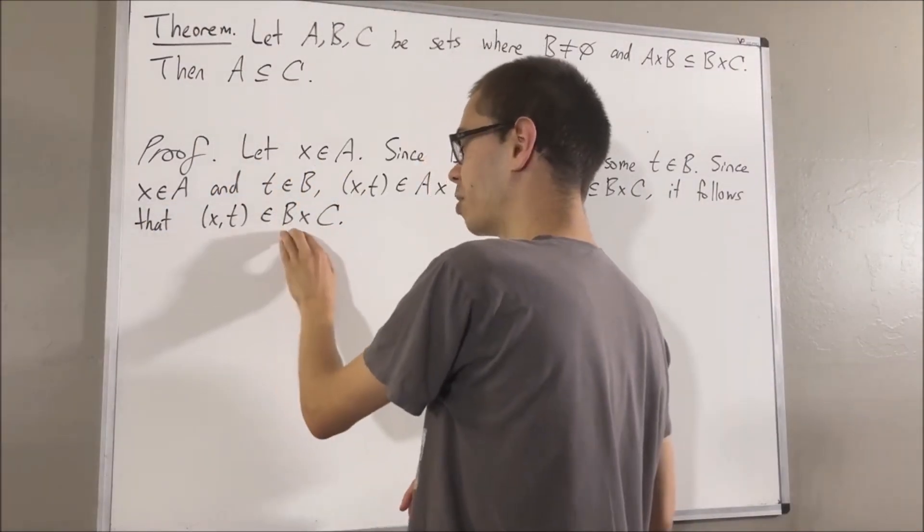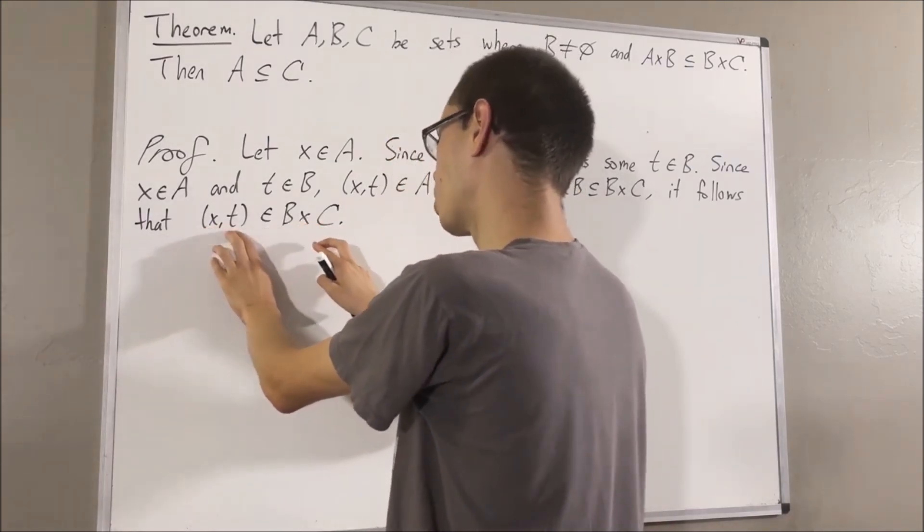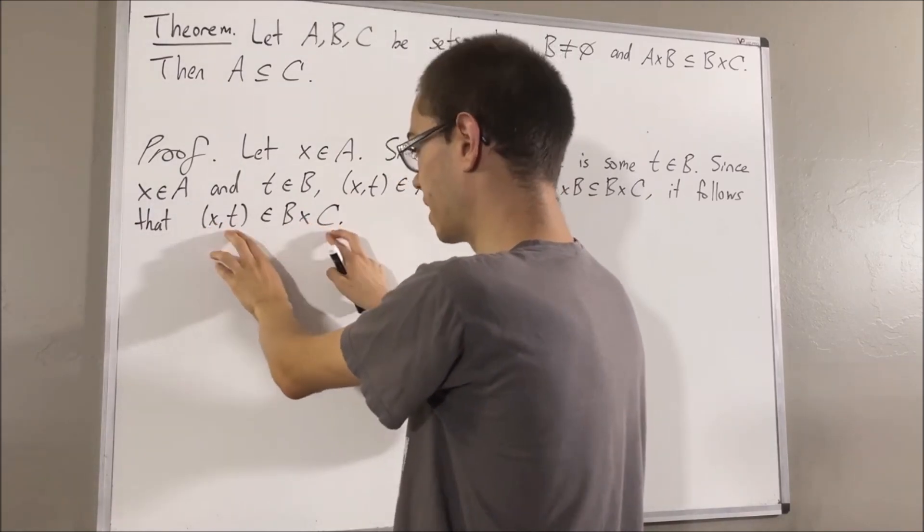Now since X comma T is an element of B times C, this means that the first coordinate is an element of the first set, and the second coordinate is an element of the second set. So X is an element of B, and T is an element of C.